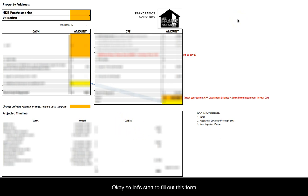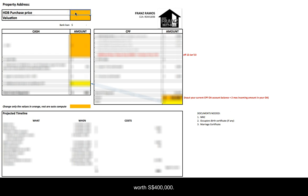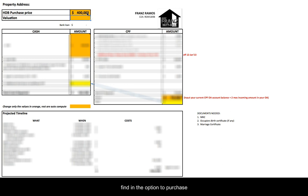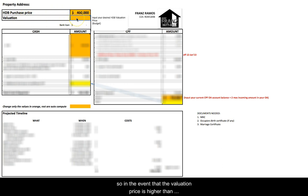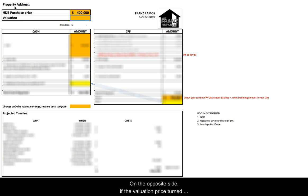Let's start to fill out this form. Assume that you're going to buy an HDB property worth $400,000 — type 400,000 here. This is the amount you can find in the option to purchase. We also have the valuation price. In the event that the valuation price is higher than the purchase price, this is what we call a below-value transaction.